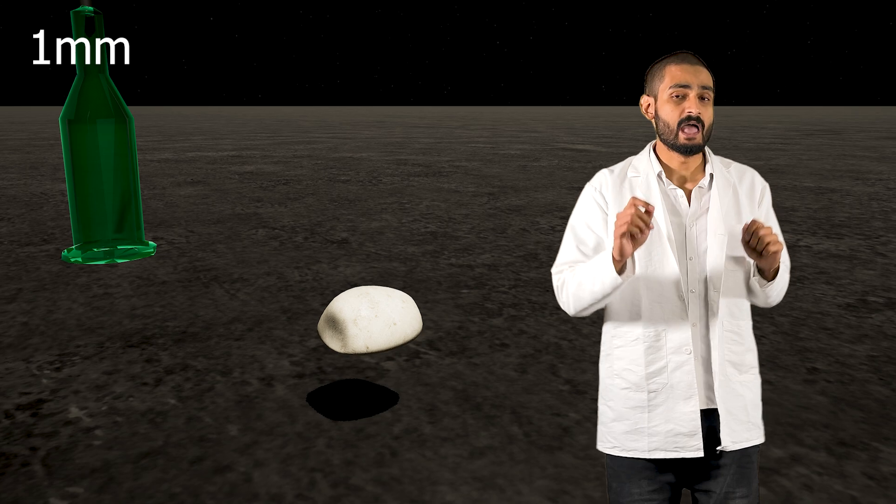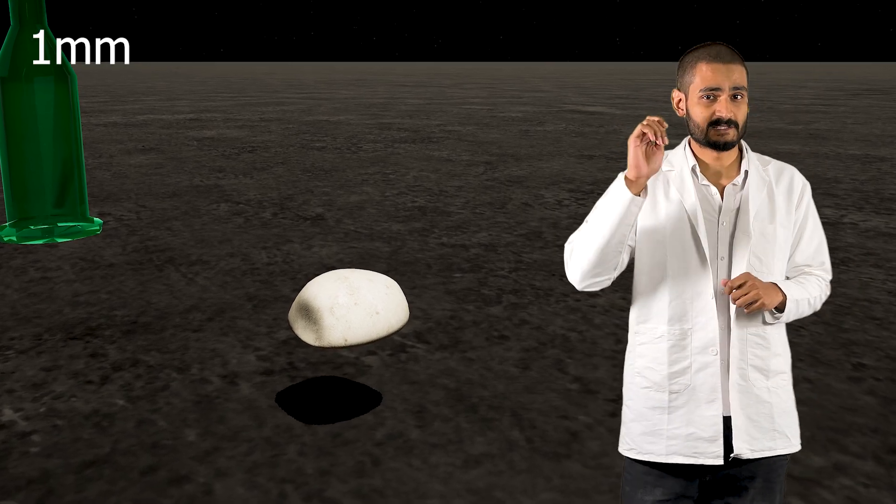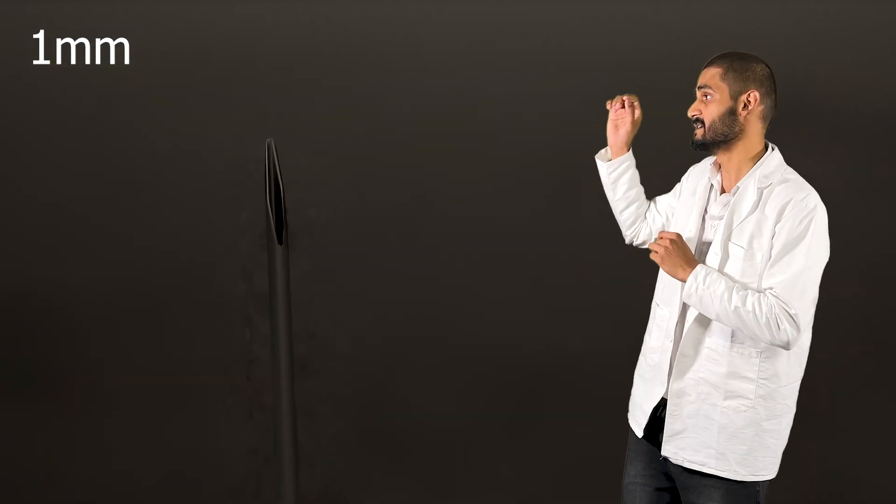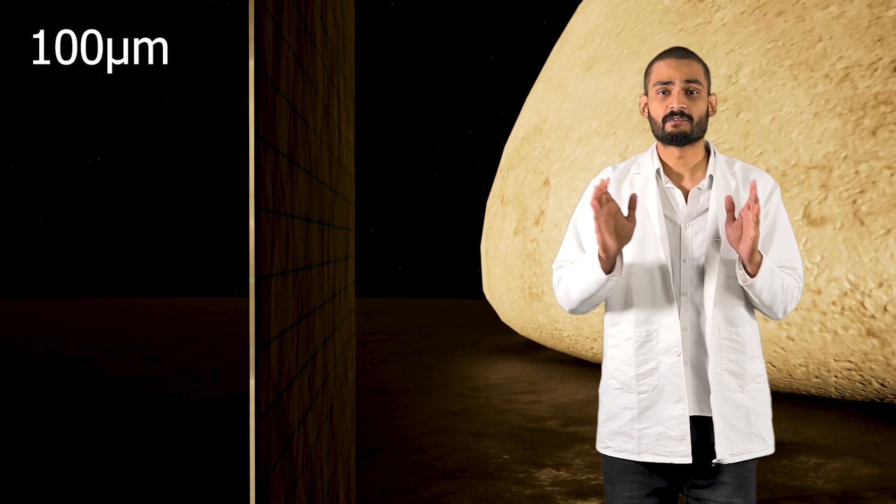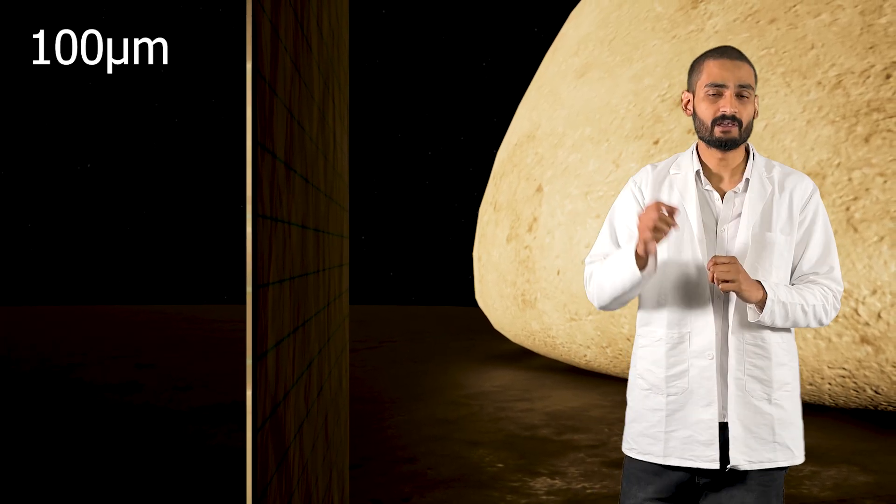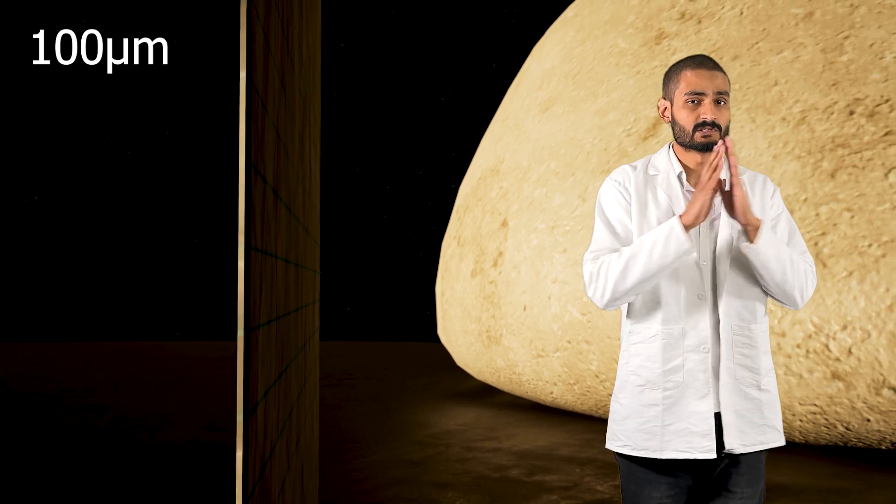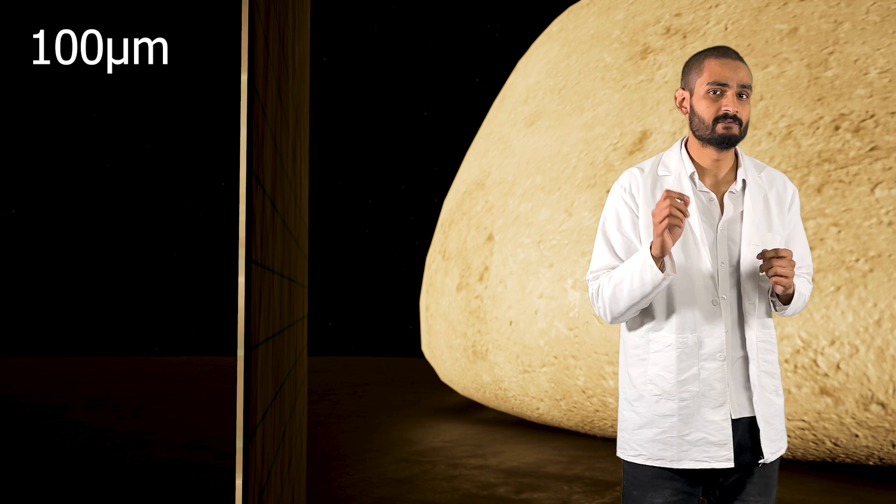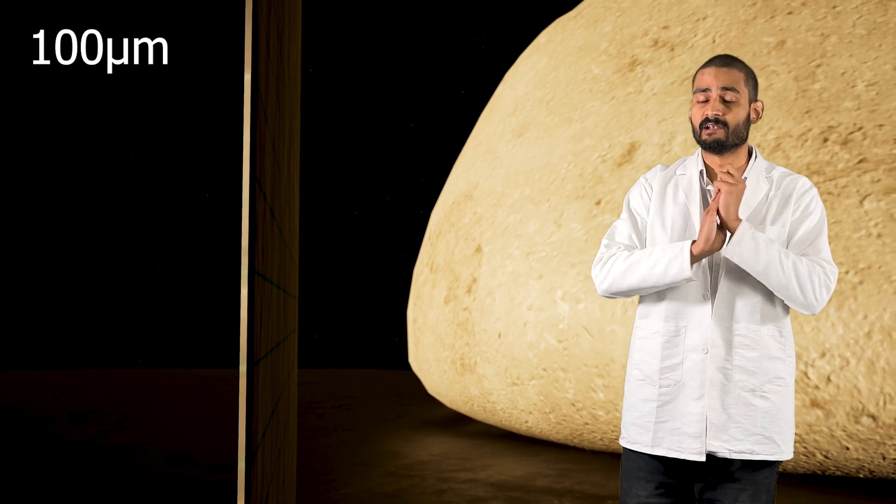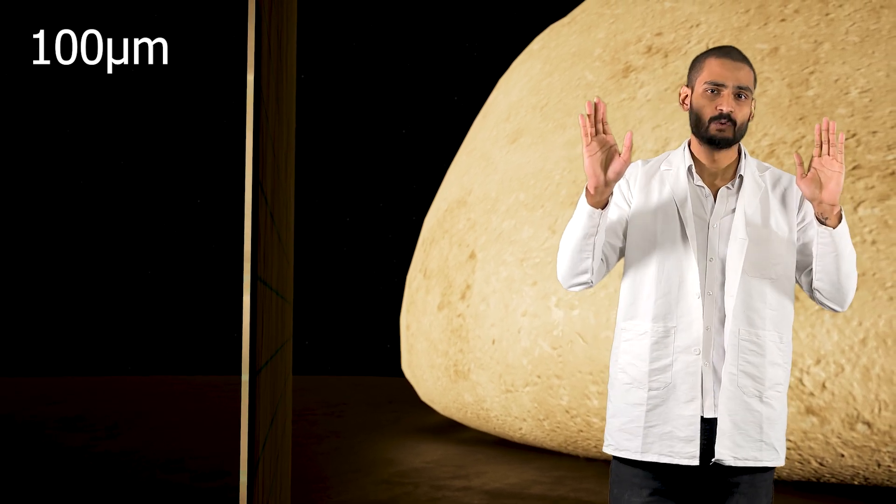At one millimeter, I am about the size of a grain of sand or roughly the size of a tip of a needle. One tenth of a millimeter or 100 micrometers is roughly the size of the thickness of a sheet of paper. This is also probably the last thing that you would be able to see with your own eyes. And things are about to get weird.